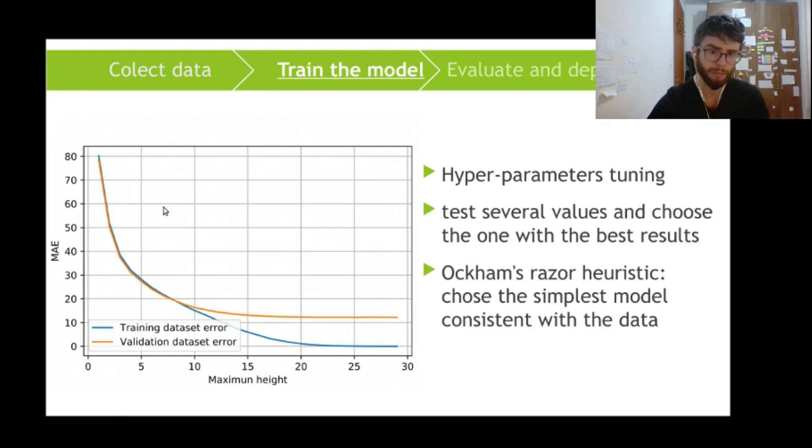So for instance, in this image referring to the hyperparameter maximum height of the random forest model, we can see that between 25 and 30 levels of the tree doesn't make much difference in the error. It doesn't improve the model. So we will choose 25 or 24, 23 because it doesn't improve anymore to keep building a more and more complex model.